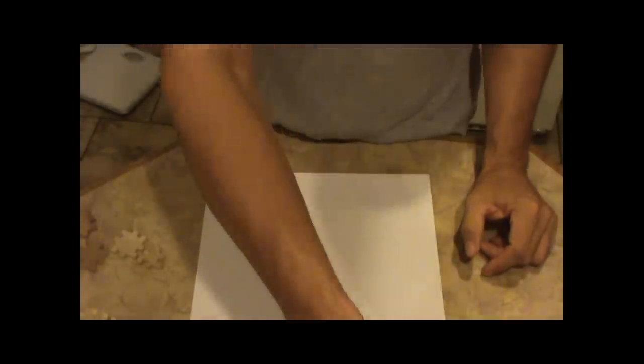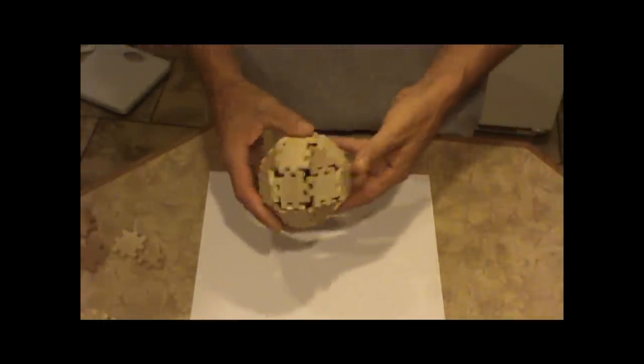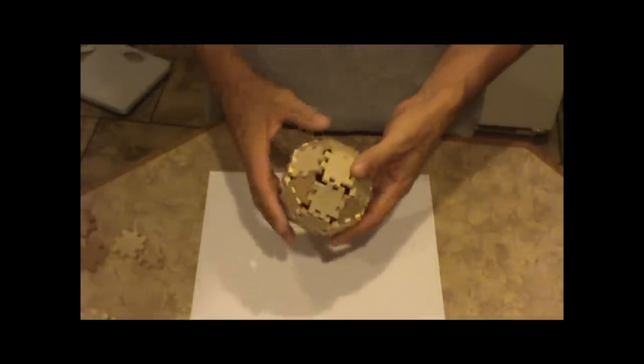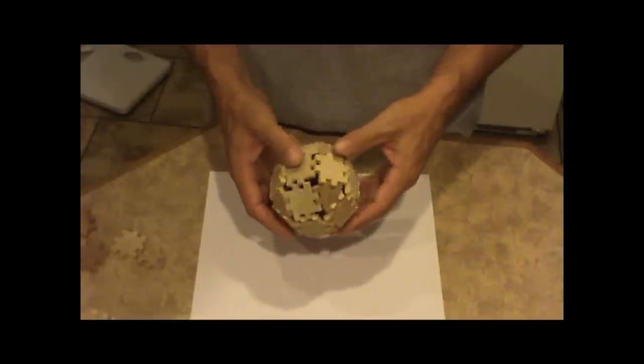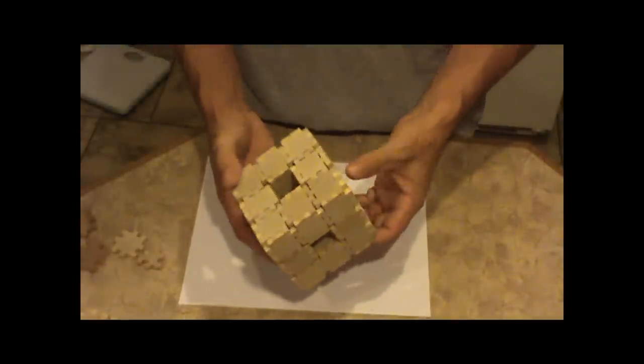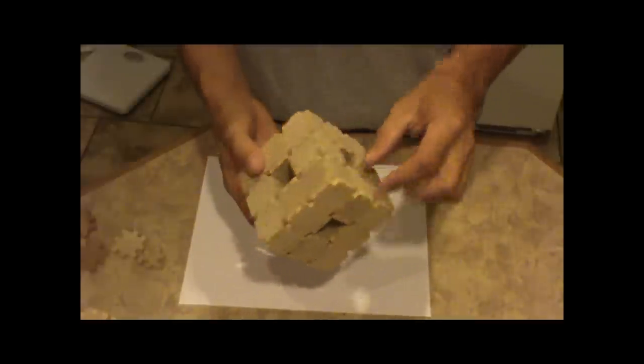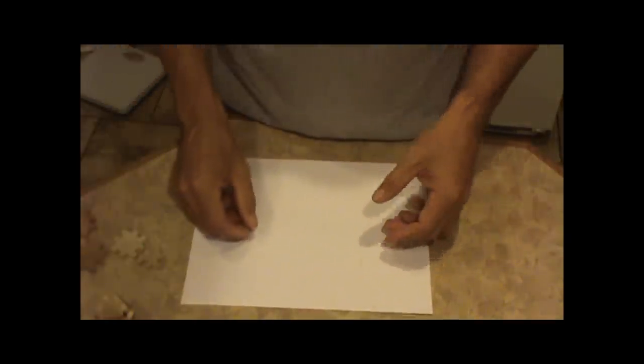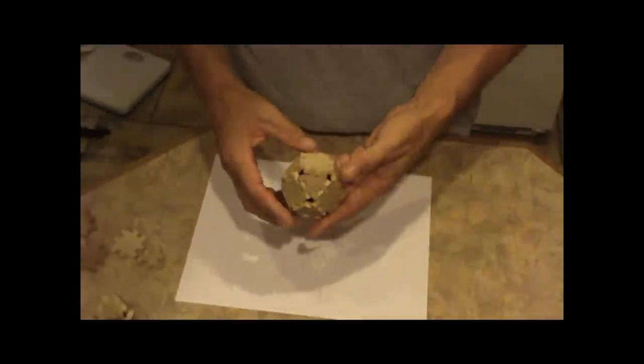And I've got some others that I've made. This is a truncated octahedron cube. It's got holes that go through the centers of each side. A truncated cube.